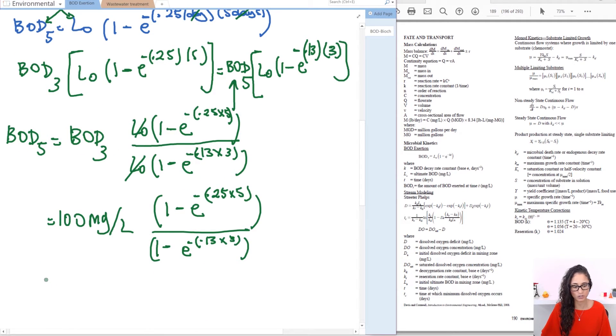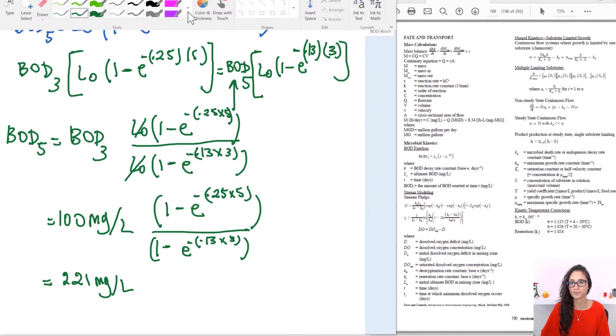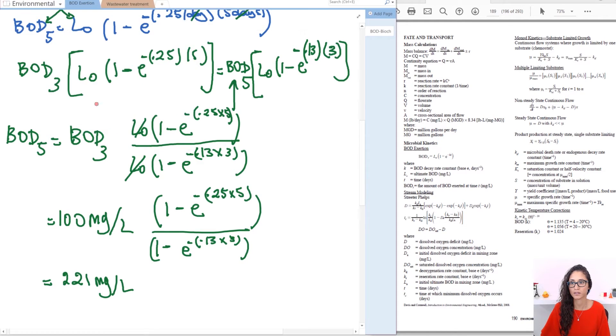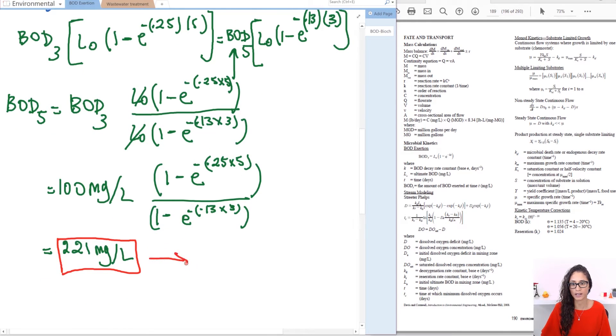If you plug in this in your calculator you should get an answer of 221 milligrams per liter. So that is your answer and that's answer A.